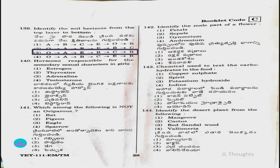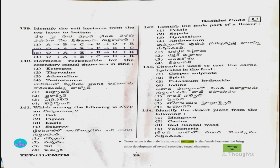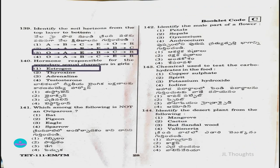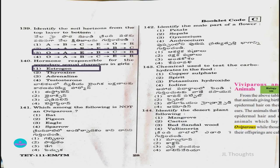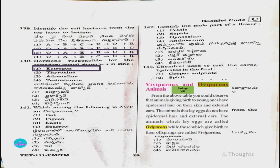Question number 140: The hormone responsible for the secondary sexual character in girls is estrogen. This is given in the class 8 biology textbook. Question number 141: Which among the following is not an oviparous animal? From the class 8 biology textbook, oviparous animals lay eggs, while viviparous animals give birth to offspring. The answer is option one, bat, since bats do not lay eggs.